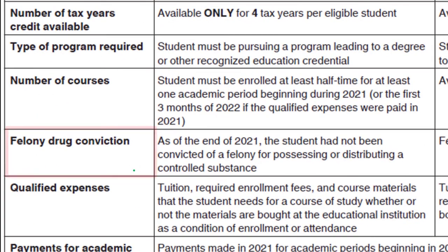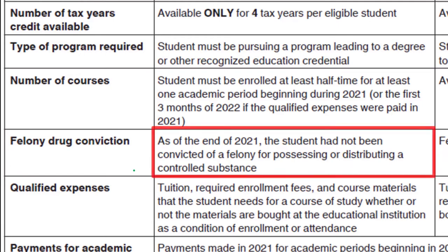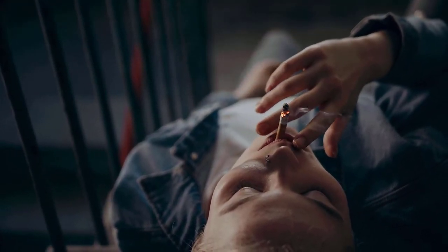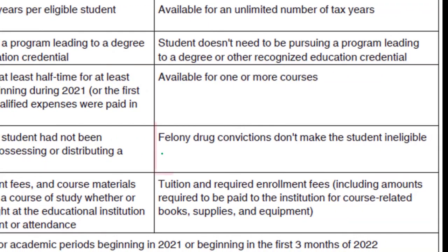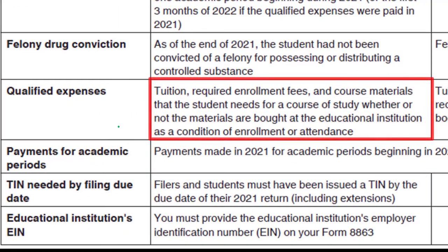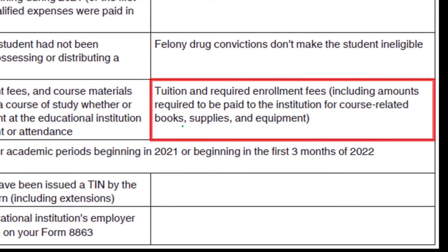Felony drug convictions: for the American Opportunity Credit, as of end of 2021 the student must not have been convicted of a felony for possessing or distributing controlled substances. For the Lifetime Learning Credit, a felony drug conviction does not make the student ineligible. Qualified expenses for the American Opportunity Credit include tuition, required enrollment fees, and course materials the student needs, whether or not bought at the educational institution. For the Lifetime Learning Credit, qualified expenses are tuition and required enrollment fees, including amounts required to be paid to the institution for course-related books, supplies, and equipment — somewhat more limited.